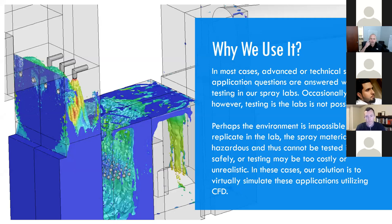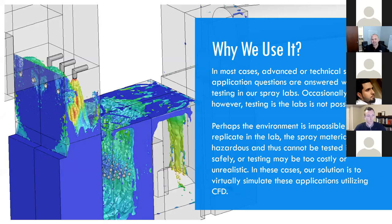Getting into why we use CFD — oftentimes we're able to spray something in the lab and visually, even quantifiably, we can say this is great and translate it into a process. But sometimes — let's say it's a refinery, a chemical plant, or another application where it's too volatile to spray in the lab — that's where CFD comes in. We can actually model what's happening and glean deep insights into your process. It's a pretty powerful resource with the right application.